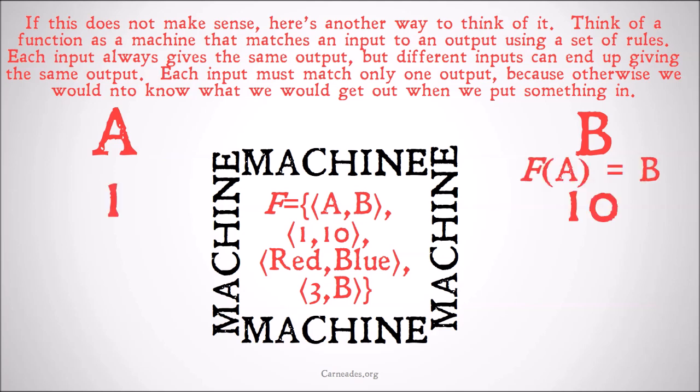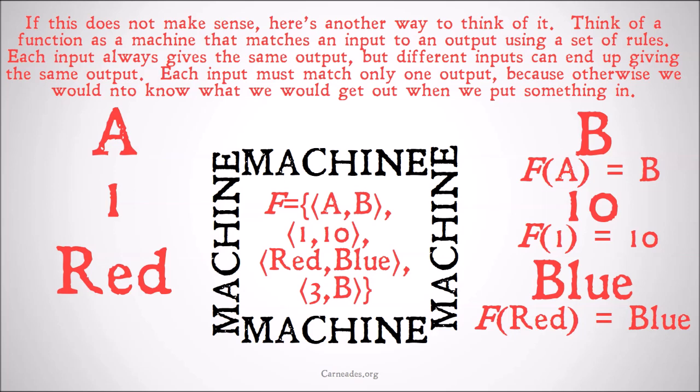When I put 1 into the machine, I get out 10, because the function of 1 is 10, or the value that is paired with 1 in the ordered pair within the function is 10. When I put red into the machine, I get out blue, because f(red) is blue. And when I put 3 into the machine, I get out b, because f(3) is b. Hopefully this is clear why the inputs, the domain, can only match with one range. Because if I had two values that a matched with, then I wouldn't know when I put the a into the machine what would be spit out.